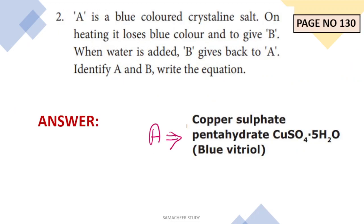Second question: A is a blue colored crystalline salt. On heating, it loses its blue color to give B.